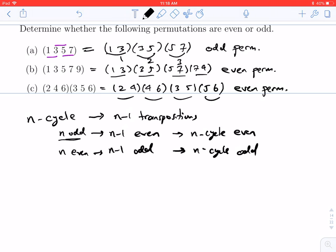So an odd cycle—an n-cycle where n is odd—will be an even permutation, and an even length cycle will give you an odd permutation. We could have immediately looked at (a) and said, oh well, 4 is an even number, right? A 4-cycle means you get an odd permutation. Whereas in (b) you have a 5-cycle, and so you get an even permutation.